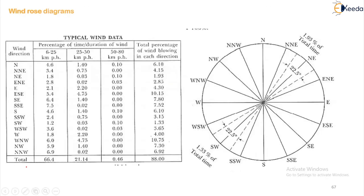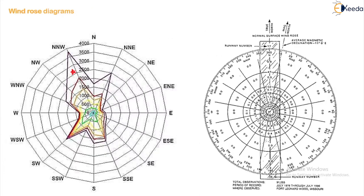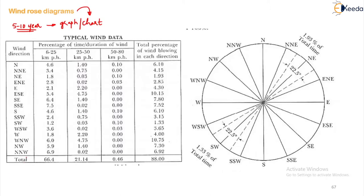To get started, for the airport, normally the average wind data of around 5 to 10 years will be collected and this will be represented in the form of a graph or a chart. That diagram is called the wind rose. The diagram is given the name wind rose because the irregular pattern which is created will be visible in the form of a rose.